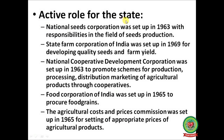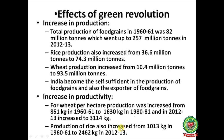Active role for the state: National Seeds Corporation was set up in 1963 for seed production. State Farm Corporation of India was set up in 1969 for developing quality seeds and farm yield. National Cooperative Development Corporation was set up in 1963 to promote production, processing, distribution, and marketing of agricultural products through cooperatives. Food Corporation of India was set up in 1965 to procure food grains. The Agricultural Costs and Prices Commission was set up in 1965 for setting appropriate prices of agricultural products.